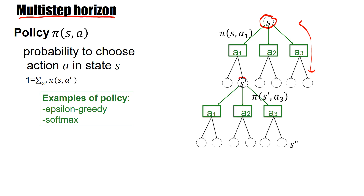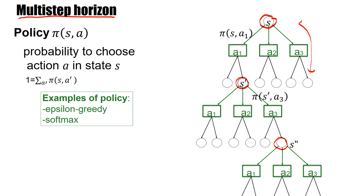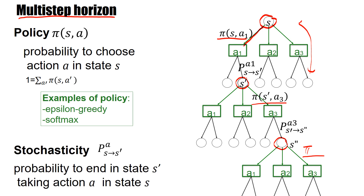Once you are in state S', you have to choose again using a policy Pi, and then you end up in some other state. One aspect of stochasticity comes from choosing actions in different states using policy Pi. The other aspect is intrinsic stochasticity: once you have taken action A1, there is a probability of transitioning to state S'. Your choice itself is also stochastic — for example, epsilon greedy.